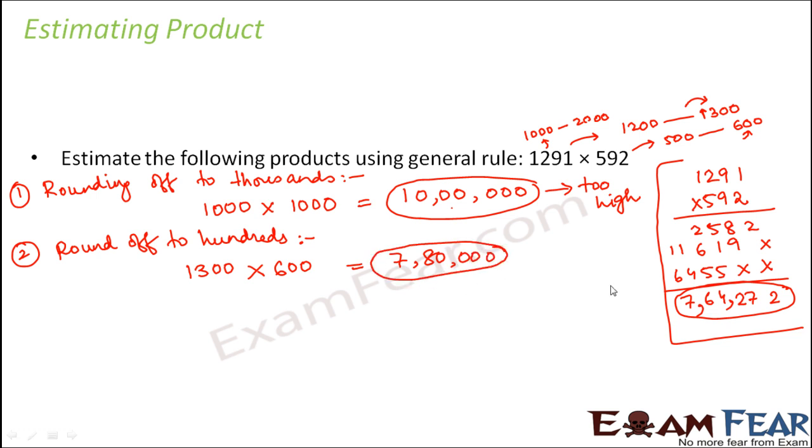Now this number is a closer estimate, so this is more accurate. However, when compared to the first scenario, it consumed more time because multiplying 1300 with 600 will take comparatively more time than multiplying 1000 into 1000.